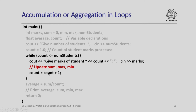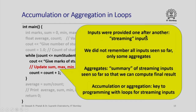Inside this loop, marks for each student are read one after the other — this is sometimes called streaming inputs. The important point is that we do not remember all inputs seen so far; we only remember aggregates: sum, max, and min. Aggregates are a summary of streaming inputs such that we do not need to remember actual input values but can use these summary values to compute the final result. Accumulation or aggregation is key to programming with loops for streaming inputs — you cannot remember all streaming inputs, so you must accumulate them.